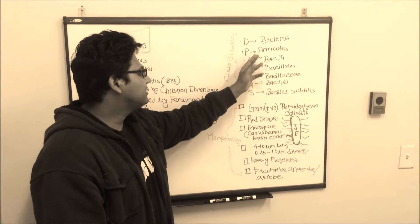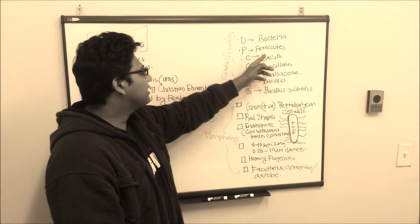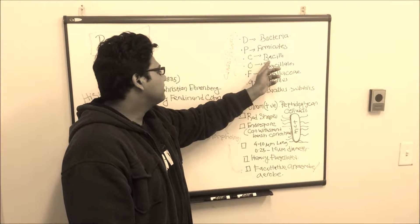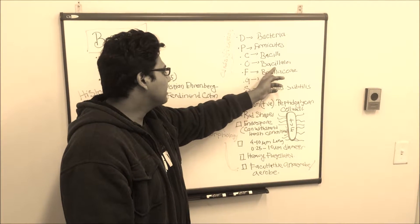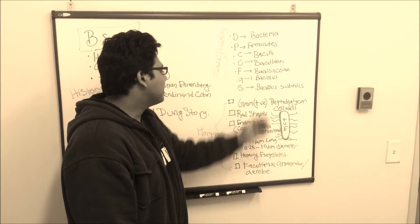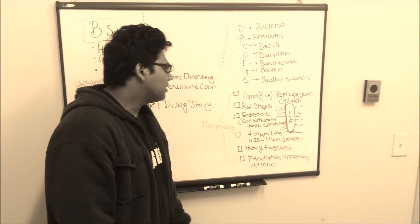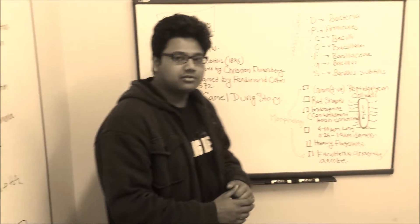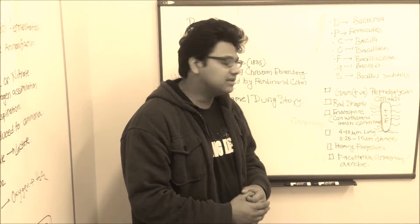It belongs to the domain bacteria, phylum firmicutes, class bacilli, order bacillales, family bacillaceae, genus bacillus, and the species is of course Bacillus subtilis. This classification helps us relate B subtilis to its relatives.